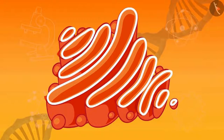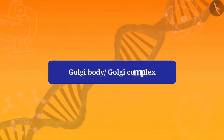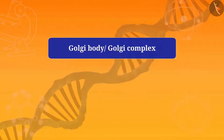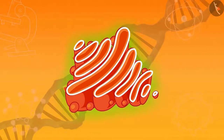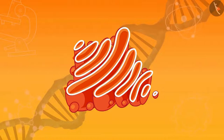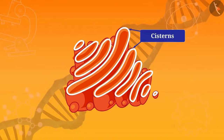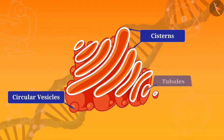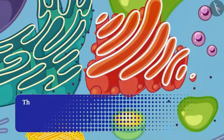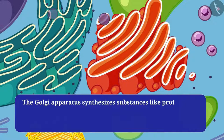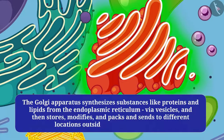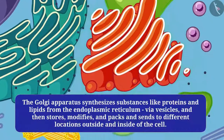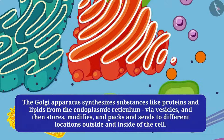Now we will understand about the Golgi apparatus, also called Golgi body or Golgi complex. It was discovered in 1898 by Camillo Golgi. It consists of a system of membrane-bound vesicles arranged approximately parallel to each other in stacks called cisterns. The Golgi apparatus also has circular vesicles and tubules, and it synthesizes substances like proteins and lipids received from the endoplasmic reticulum via vesicles, then stores, modifies, packs, and sends them to different locations outside or inside the cell.